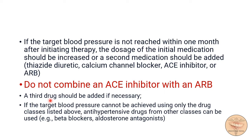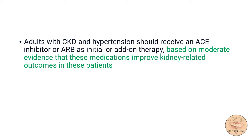A third drug should be added if necessary, when blood pressure is not controlled with two drugs. If the target blood pressure cannot be achieved using only the drug classes listed — diuretic, calcium channel blocker, ACE inhibitor, or ARB — then antihypertensive drugs from other classes like beta blockers or aldosterone antagonists can be used. Adults with chronic kidney disease and hypertension should receive an ACE inhibitor or angiotensin receptor blocker as initial or add-on therapy, because this medication improves kidney-related outcomes in these patients.